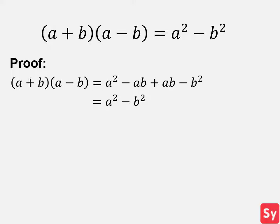Let's see some examples using this identity. First example, we have x plus 4 times x minus 4. Using the difference of two squares identity, a equals x and b equals 4.